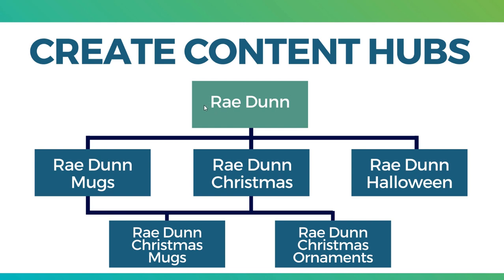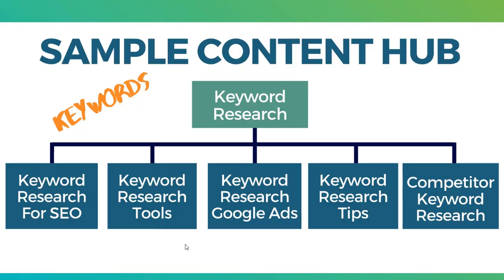Ultimately, you want to find a main topic you're trying to rank for, and then find some subtopics related to that topic. You can even break it down further into more subtopics related to your secondary subtopics. So something like Ray Dunn Christmas, Ray Dunn Christmas ornaments, and Ray Dunn Christmas mugs are two other things people are constantly searching for. For a quick example of a content hub, let's say I want to rank for the keyword 'keyword research.' The first thing I do is pull out about 10 of the most popular keywords that are subtopics to this main topic.